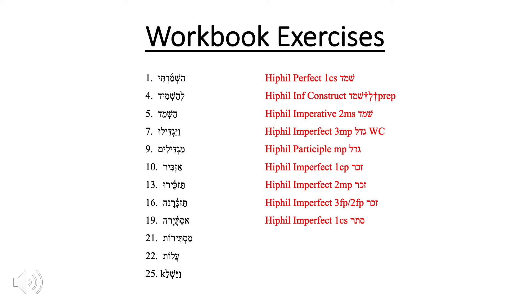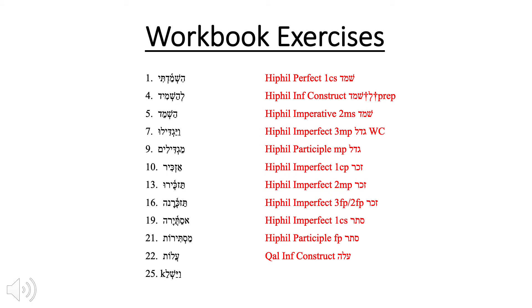Number twenty-one is also not one that you had to do, but I think it's important. Number twenty-one is a Hiphil participle feminine plural, hence the ot at the end. Again we have the mem plus the patah at the beginning indicating that this is indeed a participle. The hirik yod in the middle confirms it, and the patah underneath the mem indicates that it is a Hiphil. Number twenty-two is a trick question just to make sure you weren't sleeping. We see the ot at the end, which because this is a third-hey verb indicates this is automatically an infinitive construct. This is a Qal infinitive construct thrown in here in a list of Hiphils just to make sure you don't get comfortable.